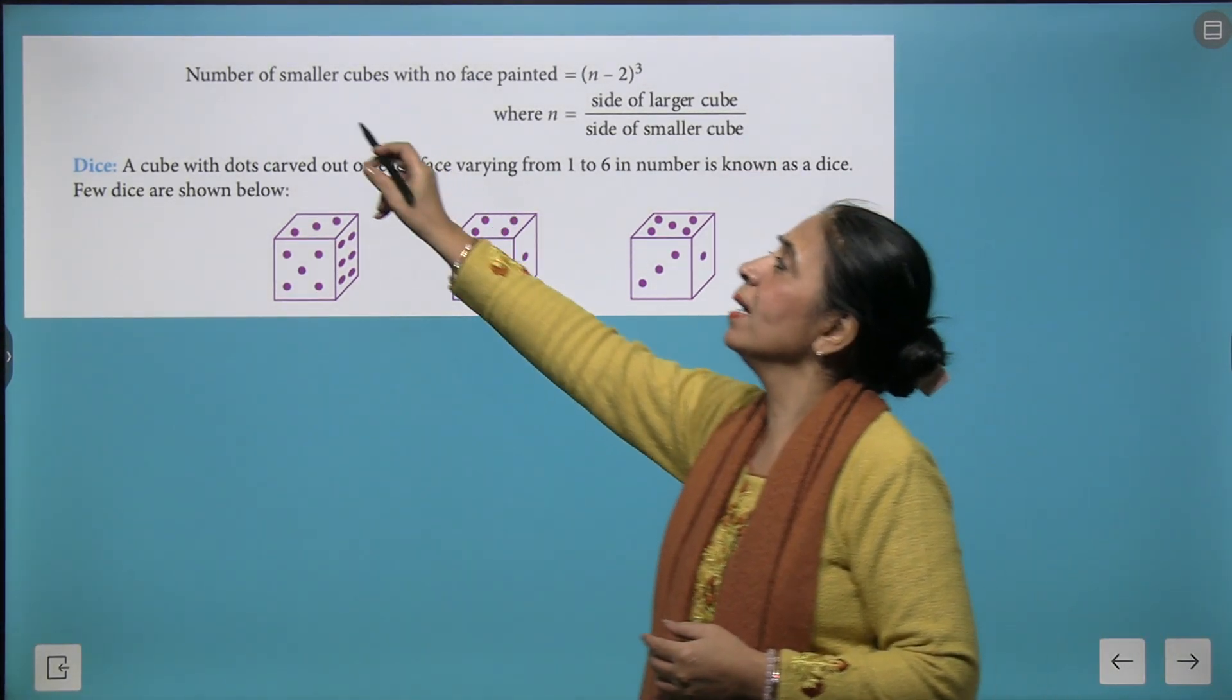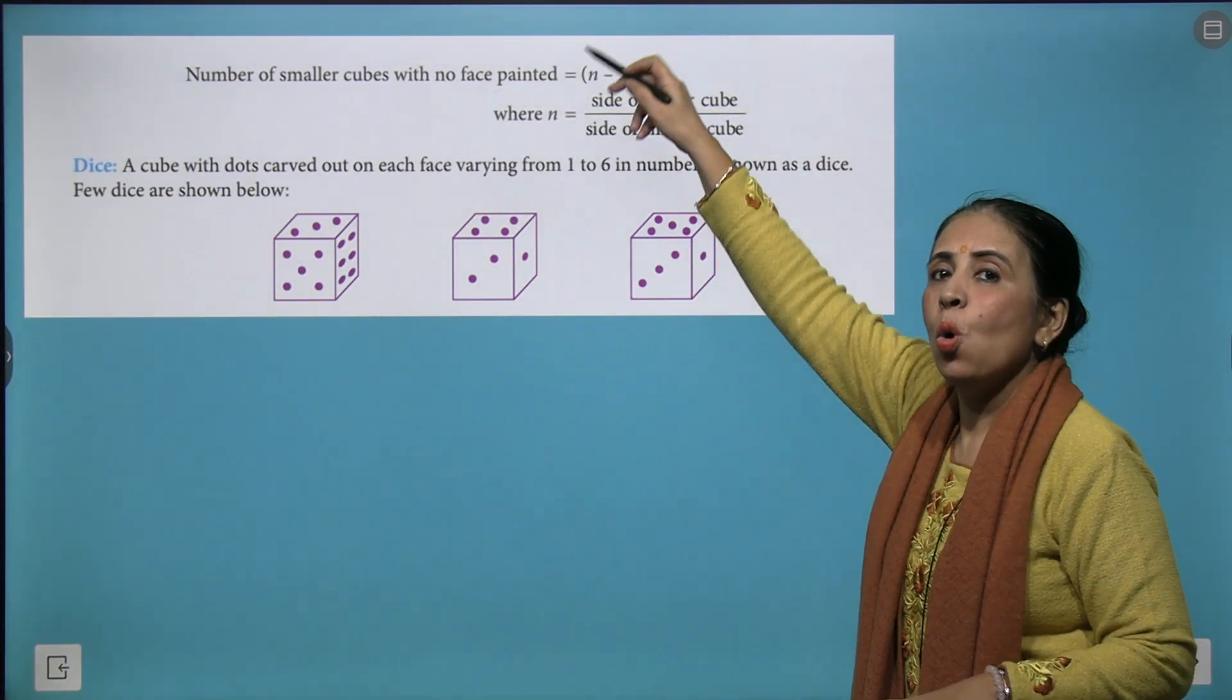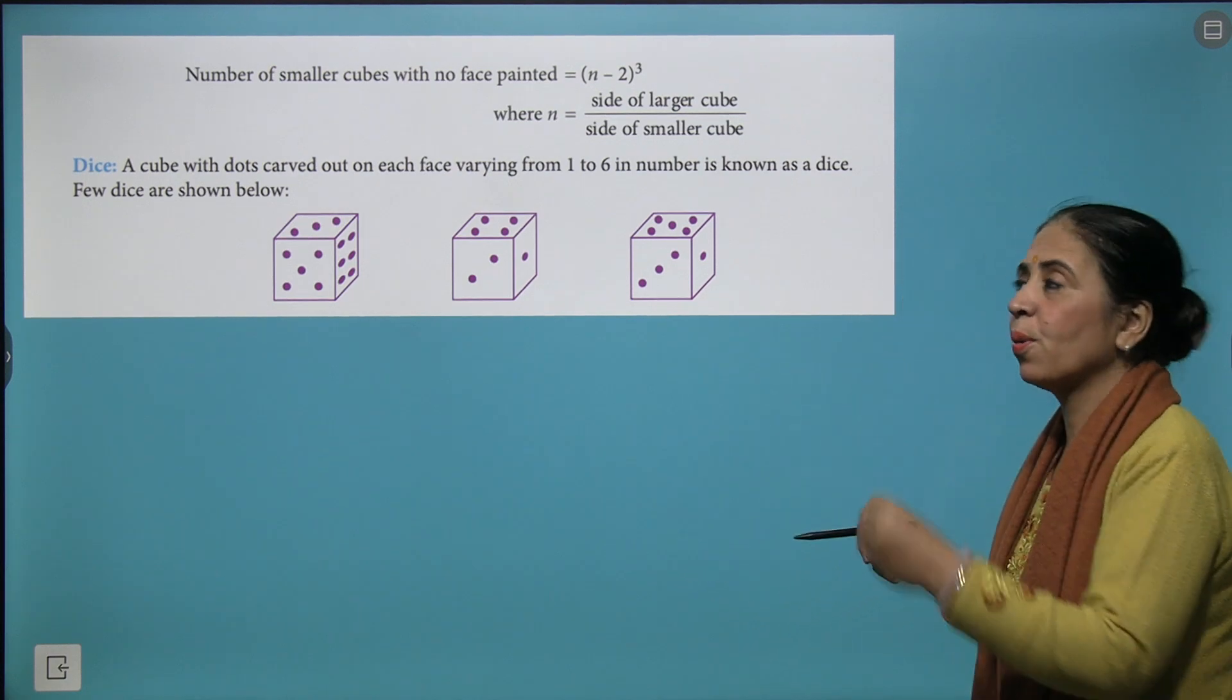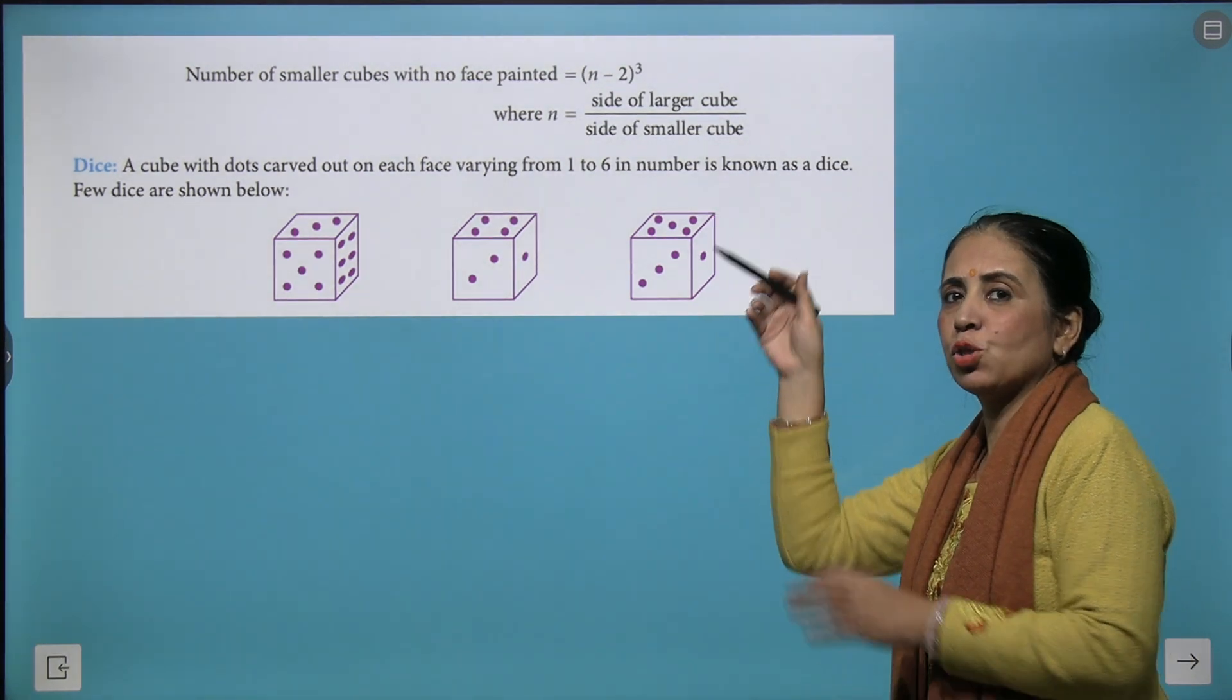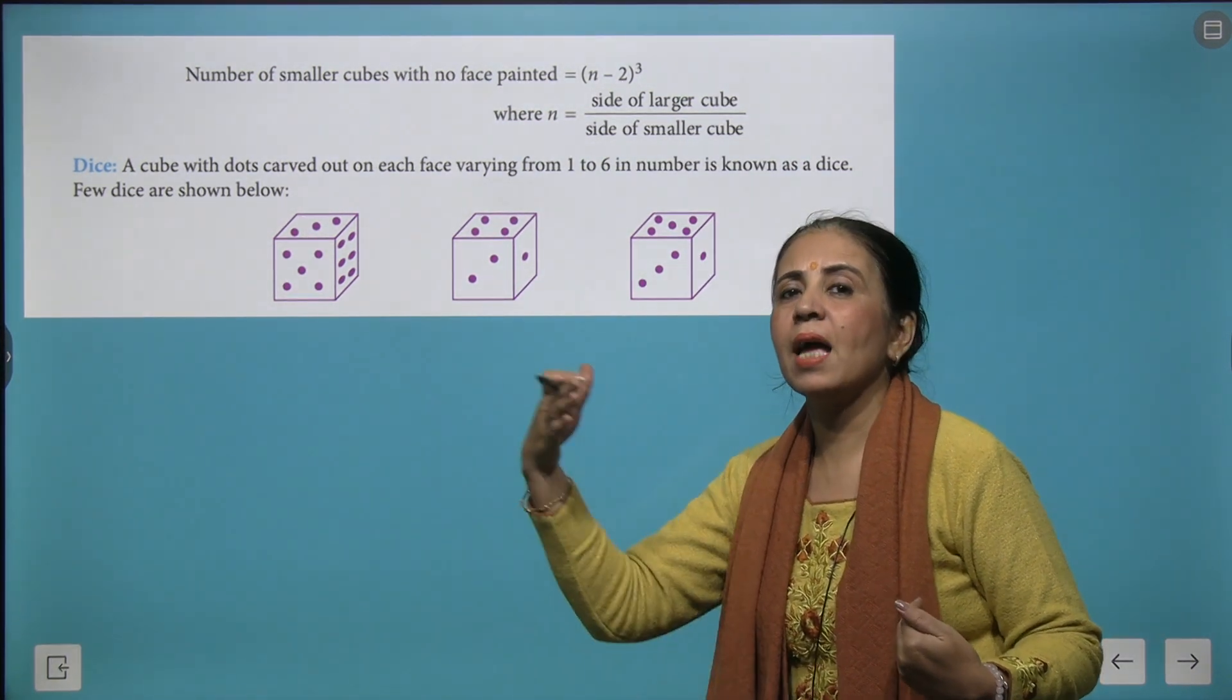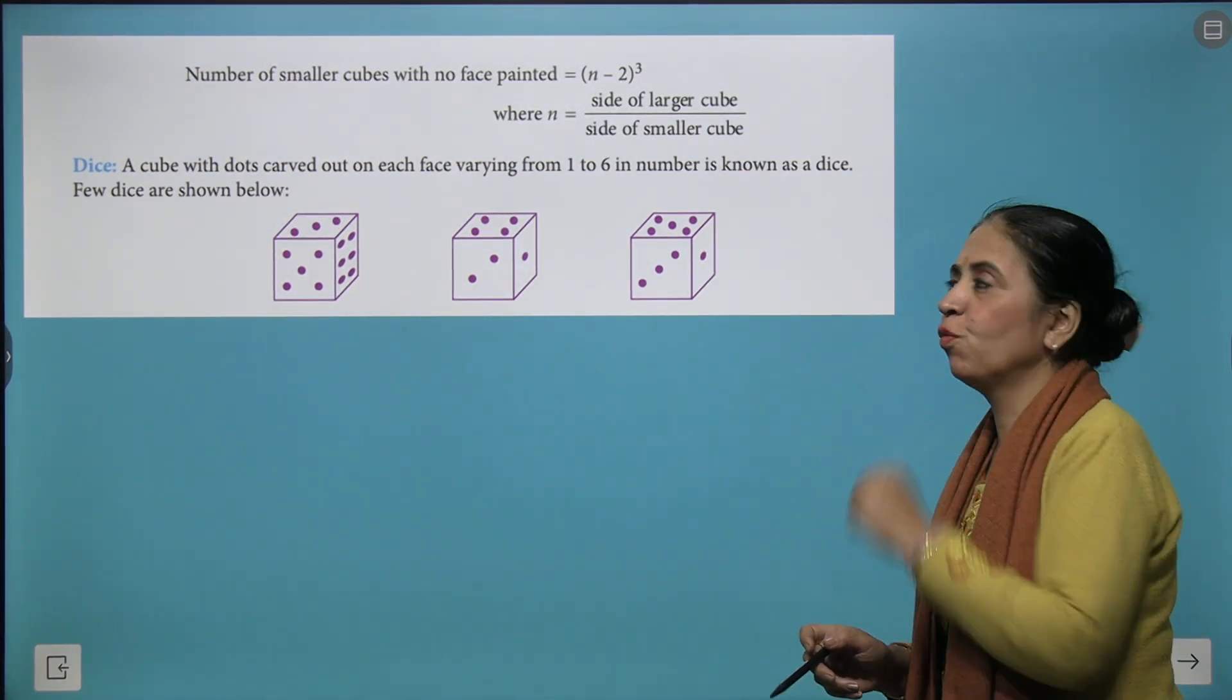And the next thing is number of smaller cubes which have no painted face. The formula is n minus 2 whole cubed. And where n is to be calculated. Now what is n? n is the ratio of the size of the bigger cube divided by the size of the smaller cubes. So suppose you have a bigger cube with 8 centimeter of all the sides and you are cutting it into 2 to 2 centimeter each. Then 8 divided by 2 n becomes 4.